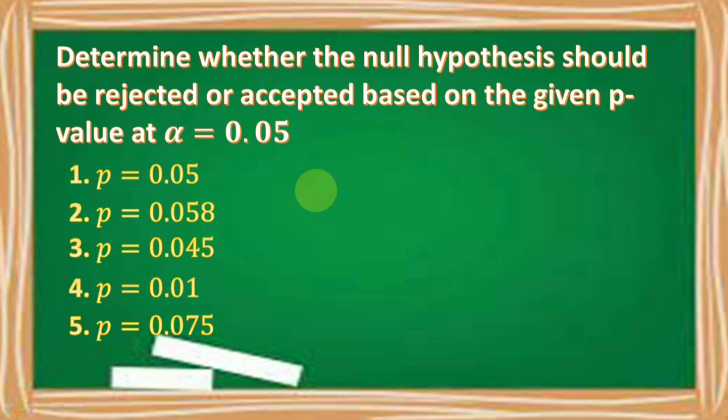Let's have number one. Our p-value is 0.05. The decision is to reject the null hypothesis because our p-value is equal to our alpha level. Number two: our p-value is equal to 0.058. Do we need to reject or accept the null hypothesis?